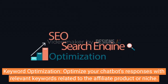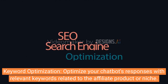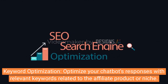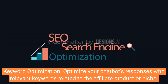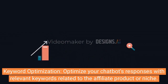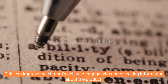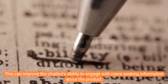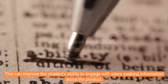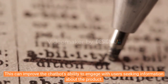Keyword optimization. Optimize your chatbot's responses with relevant keywords related to the affiliate product or niche. This can improve the chatbot's ability to engage with users seeking information about the product.